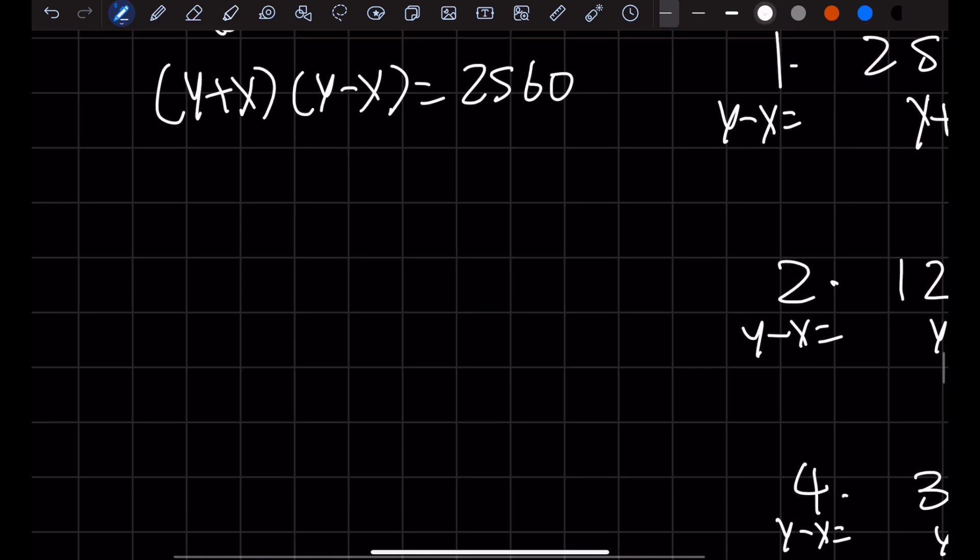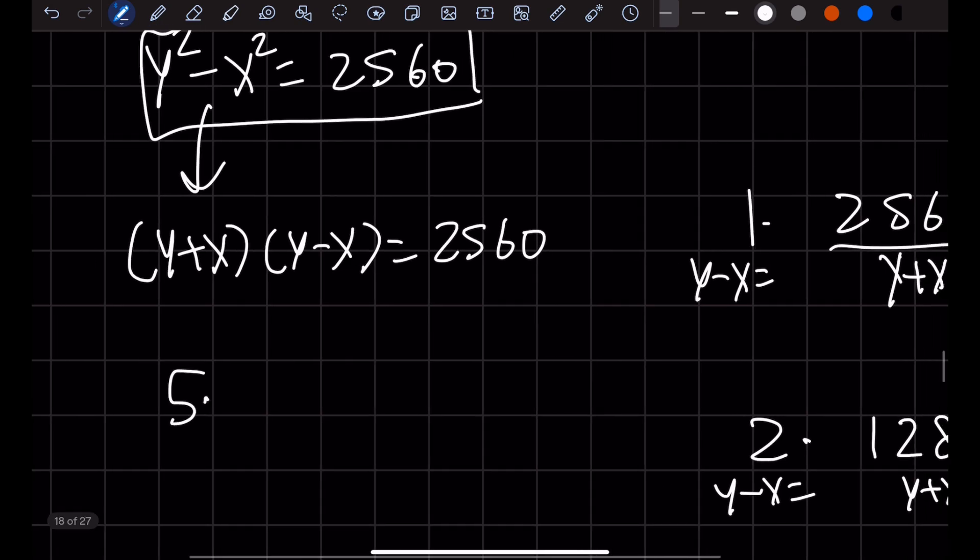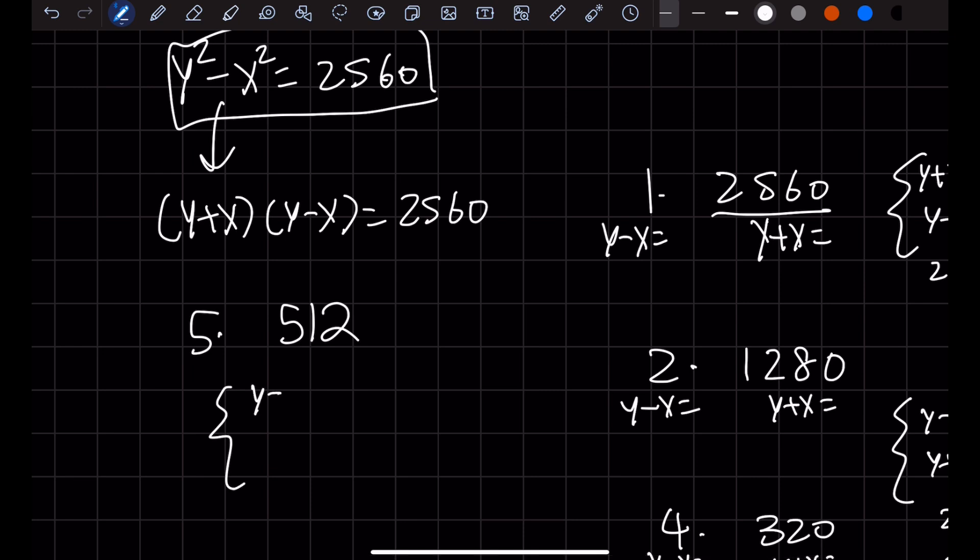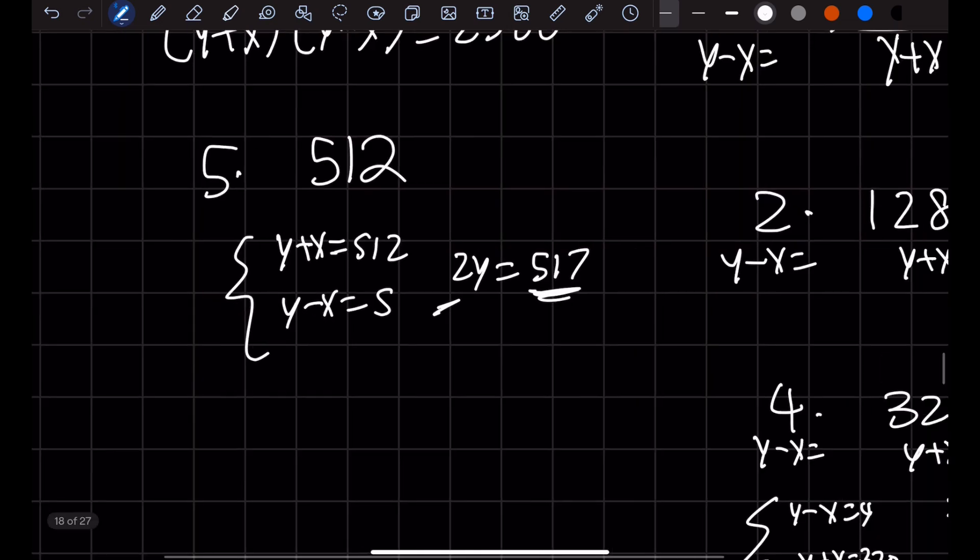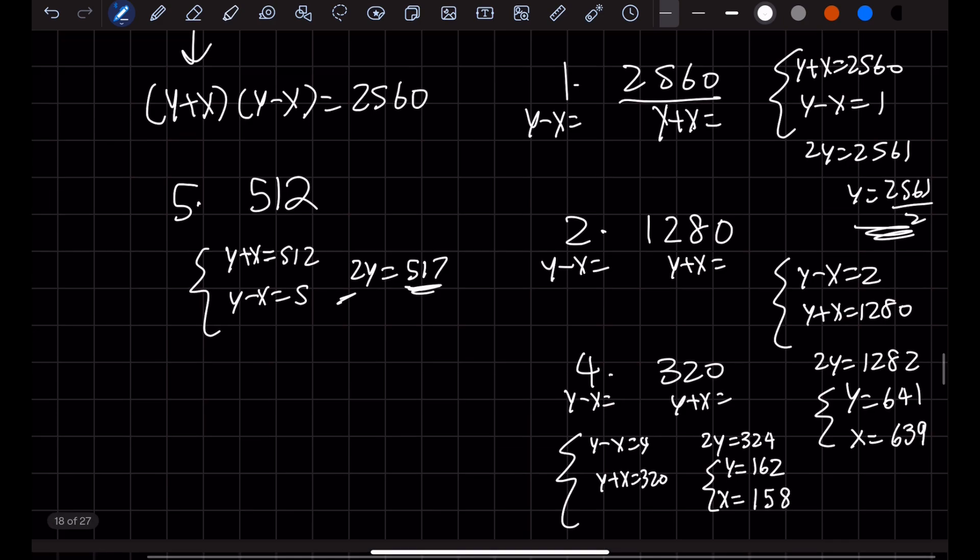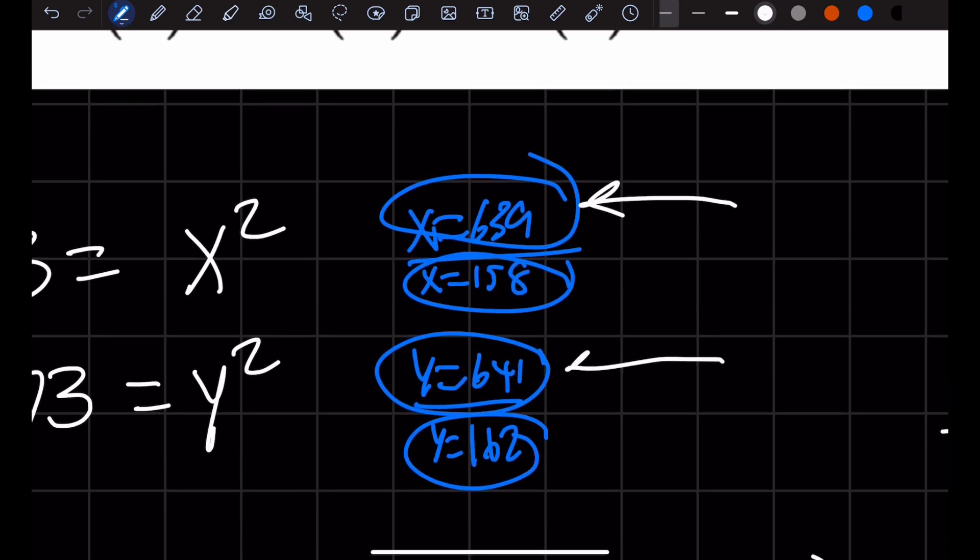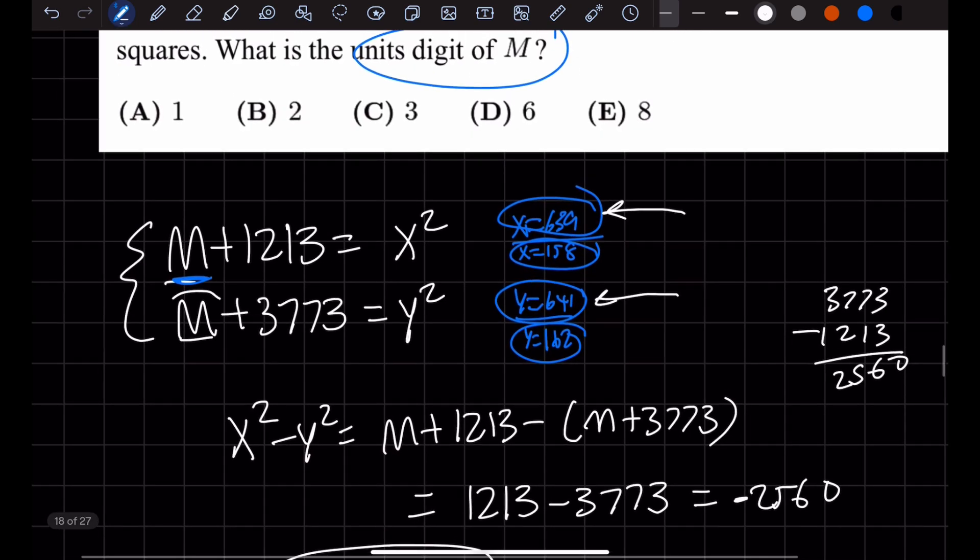Let's try another number. 2,560 is divisible by 5, so we have 5 times 512. Does this give us a bigger number? 2y equals 517, and 517 divided by 2 is not even an integer, so we can ignore that. If you keep doing this process, the numbers usually get smaller with each iteration. We'll never see numbers as big as y equals 641 and x equals 639, so we can be confident this maximizes our M.